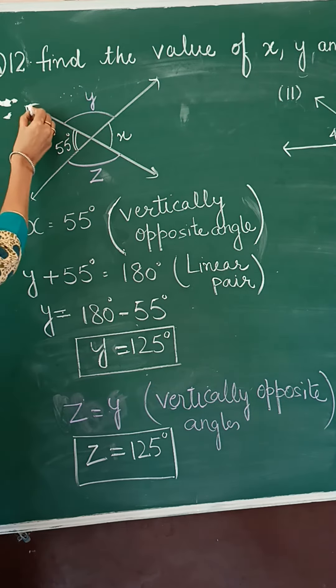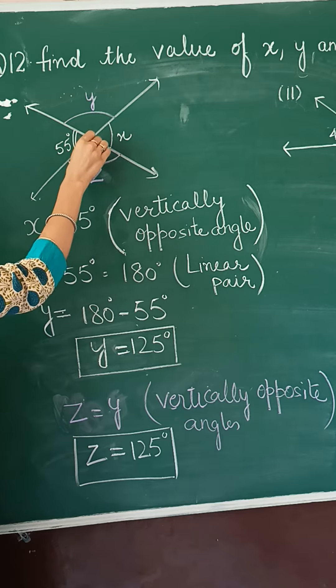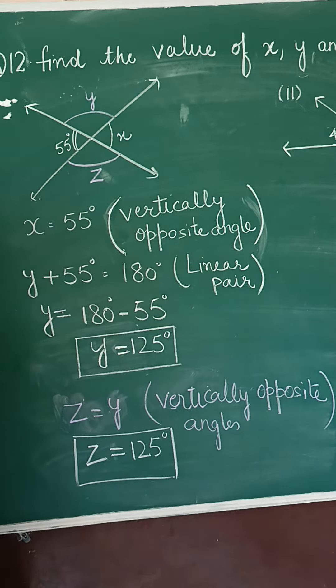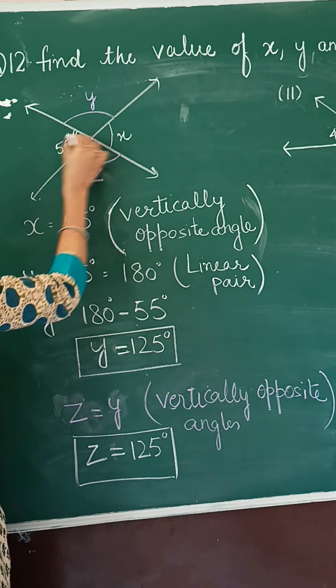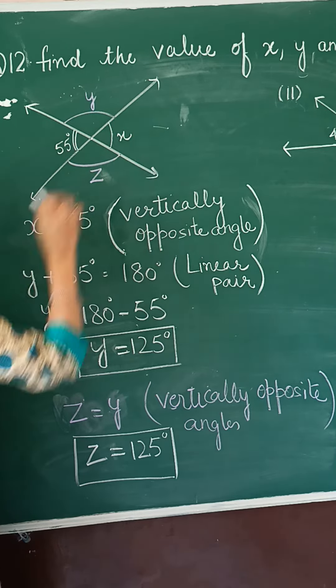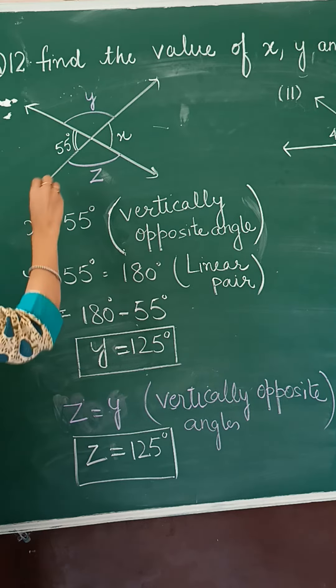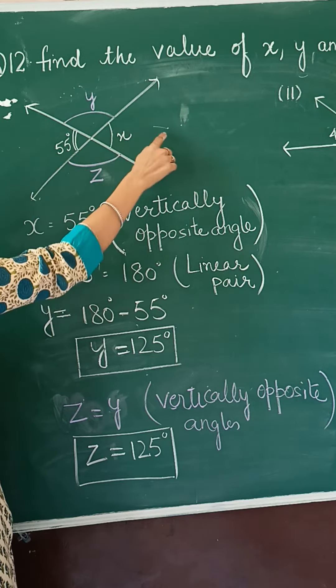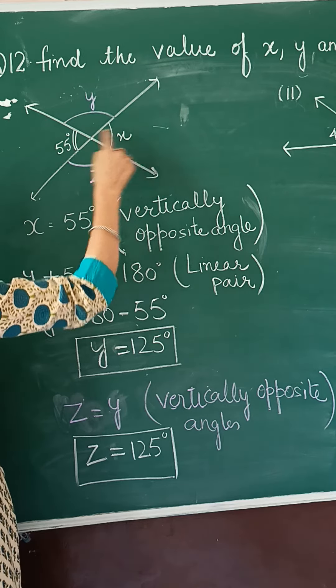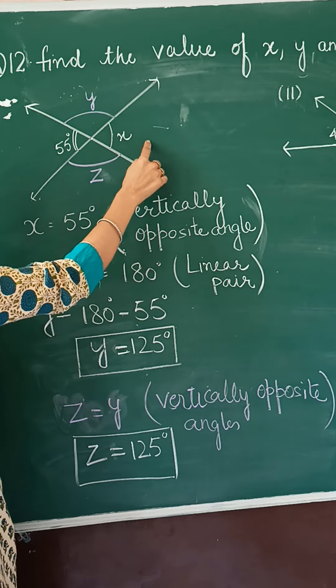So here we are observing two lines intersecting at this point. When two lines intersect at a point, we get four angles. Then opposite angles are known as vertical opposite angle. So children, here you are getting x and 55. They are opposite to each other. So they are known as vertical opposite angle. And vertical opposite angles are always equal.